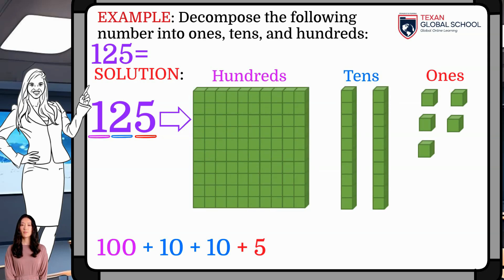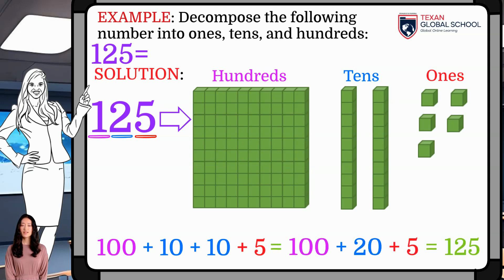We can model the problem using 5 cubes, or 5 1s, 2 10s, and 100. In this way, we can see that adding them results 125.